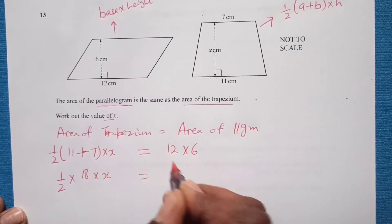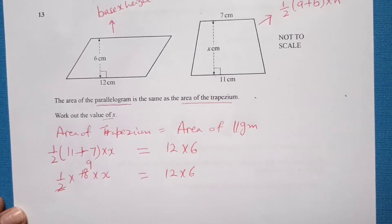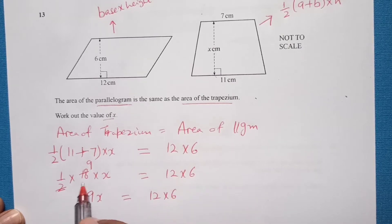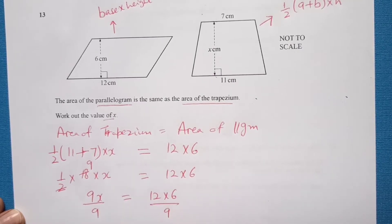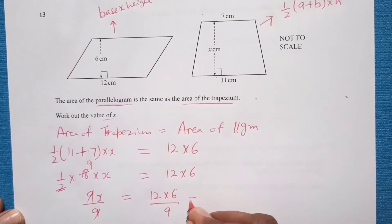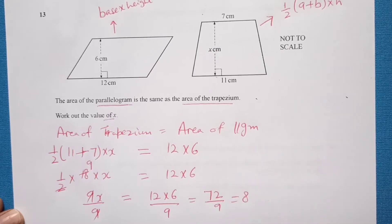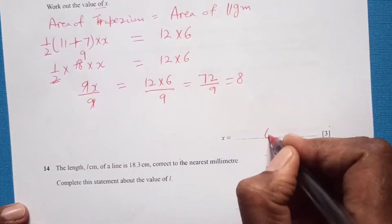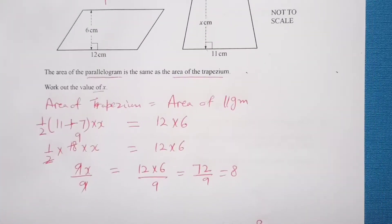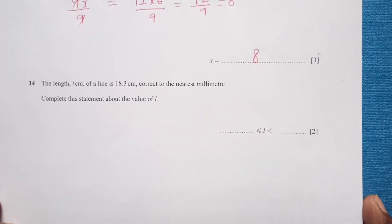Simplifying: half times 18 times x gives 9x, and 12 times 6 is 72. So 9x equals 72. Dividing both sides by 9 gives x equals 72 over 9, which is 8. So the value of x is 8.